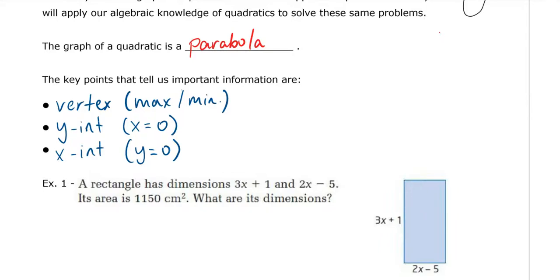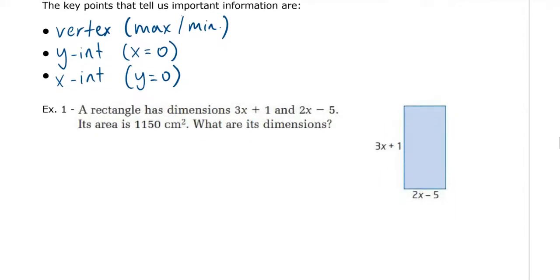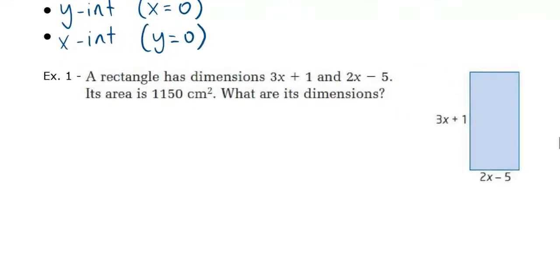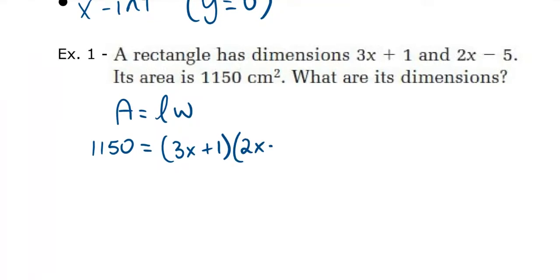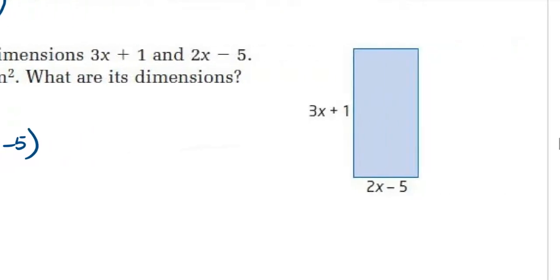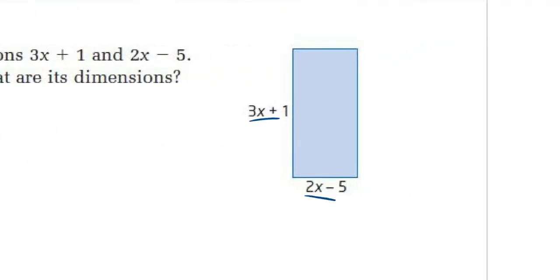Let's look at Example 1. A rectangle has dimensions 3x plus 1 and 2x minus 5. Its area is 1,150 centimeters squared. What are its dimensions? The area of a rectangle is length times width. We know the area given is 1,150 cm². We can say 3x plus 1 is the length, and 2x minus 5 is the width.